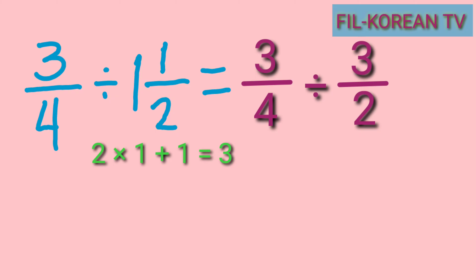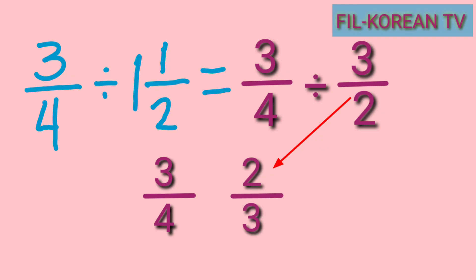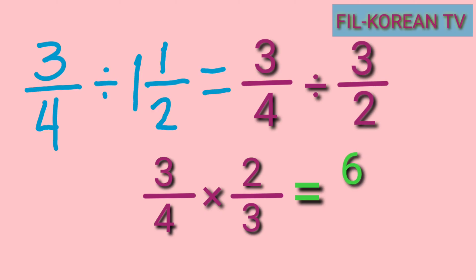The next step is to get the reciprocal of the divisor. We will just flip 3 over 2 by exchanging the position of the numerator and the denominator. So the dividend is three fourths and the reciprocal of 3 over 2 is 2 thirds. We change the division sign into a multiplication sign. Then we multiply the numerators and the denominators: 3 times 2 equals 6, and 4 times 3 equals 12.